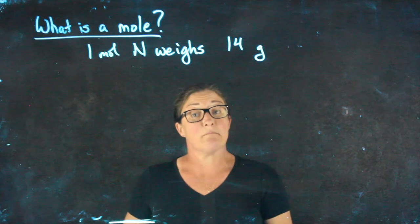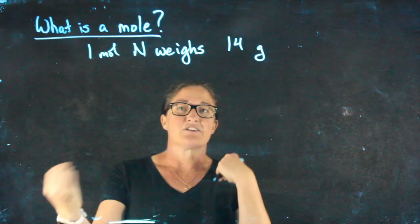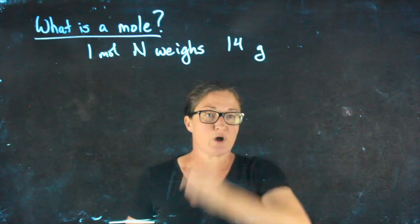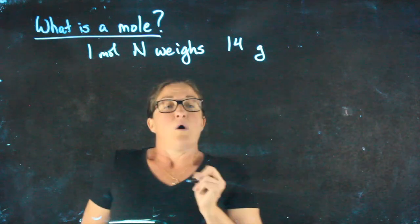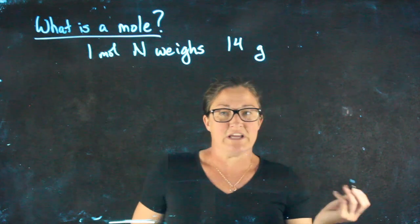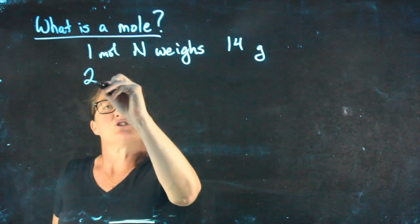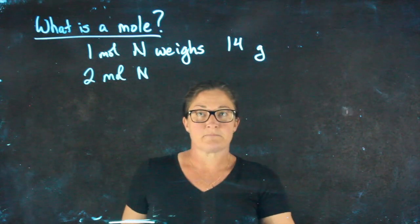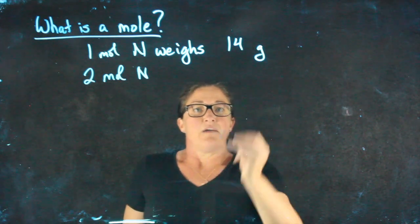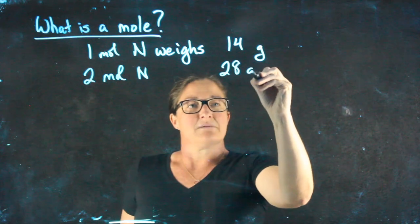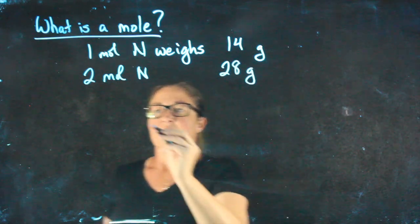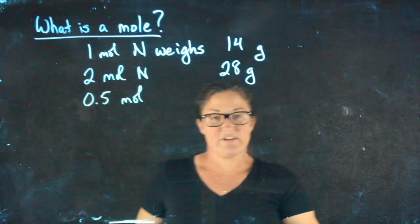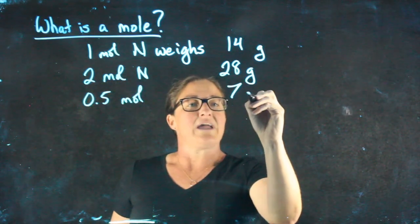I realize I haven't yet explained to you what a mole is. That's okay. We're going to use it as a little bit of a black box for now and keep moving forward, and then we'll go back and tie the pieces together. One mole of nitrogen weighs 14 grams. How much do you imagine if I had two moles of nitrogen it might weigh? If you guessed 28 grams, you're correct. What about if I only had half a mole of it? It would weigh 7 grams.